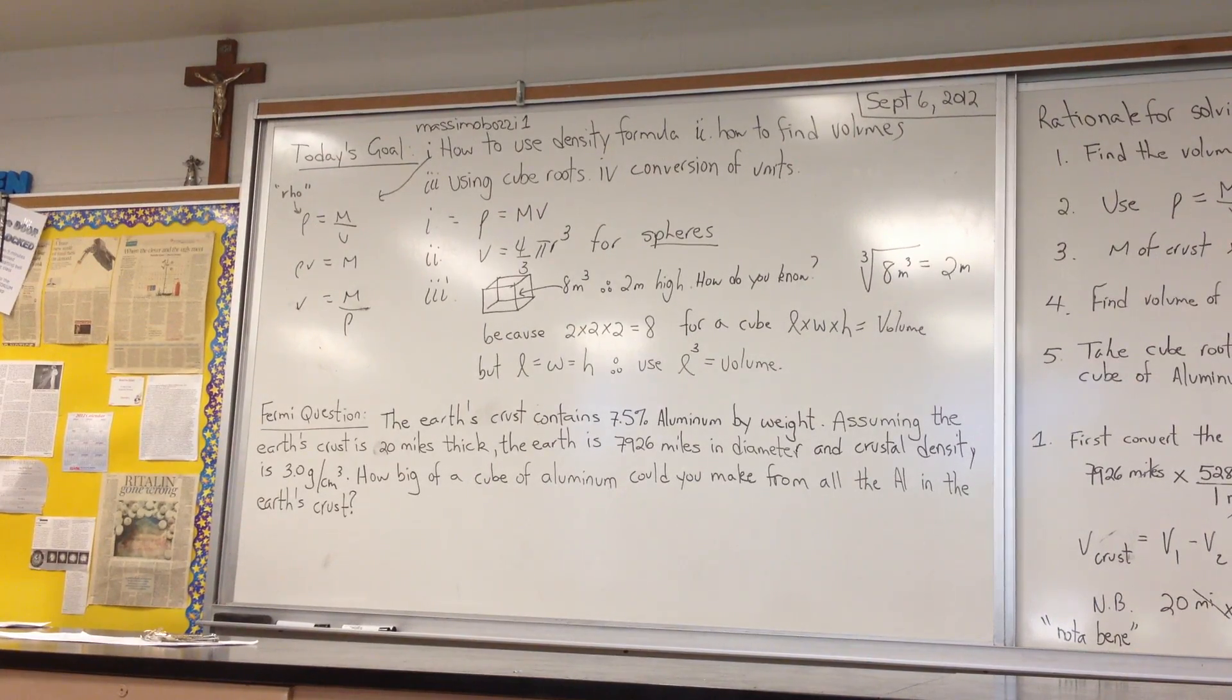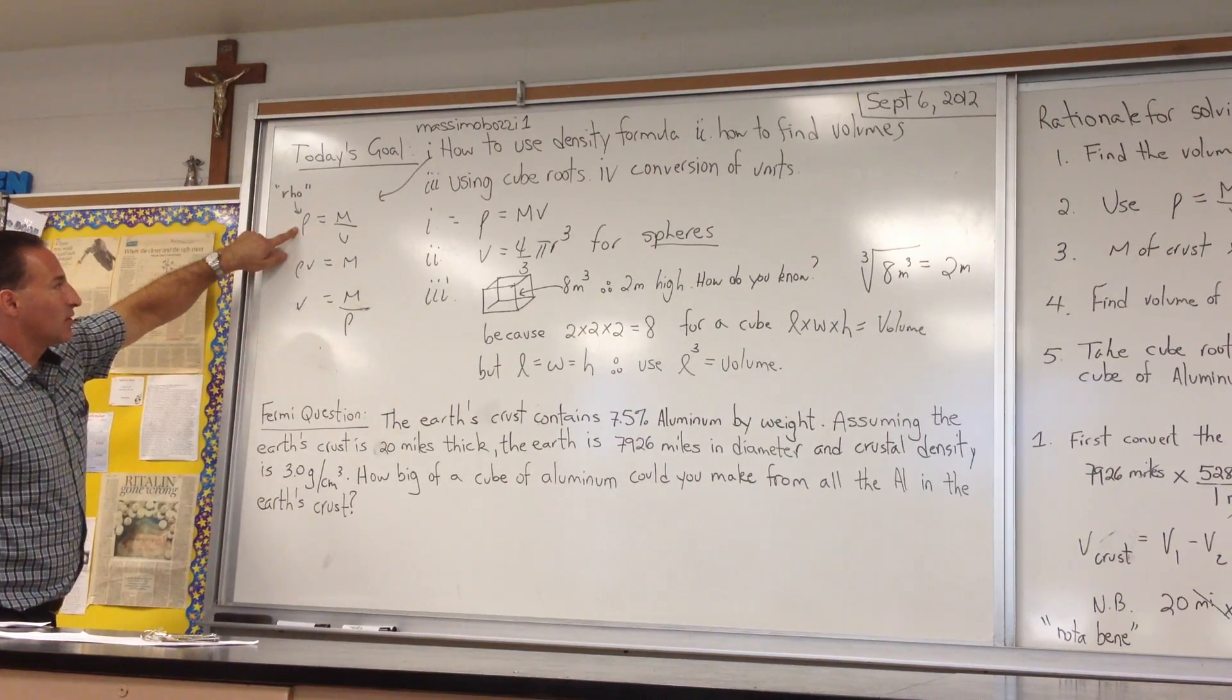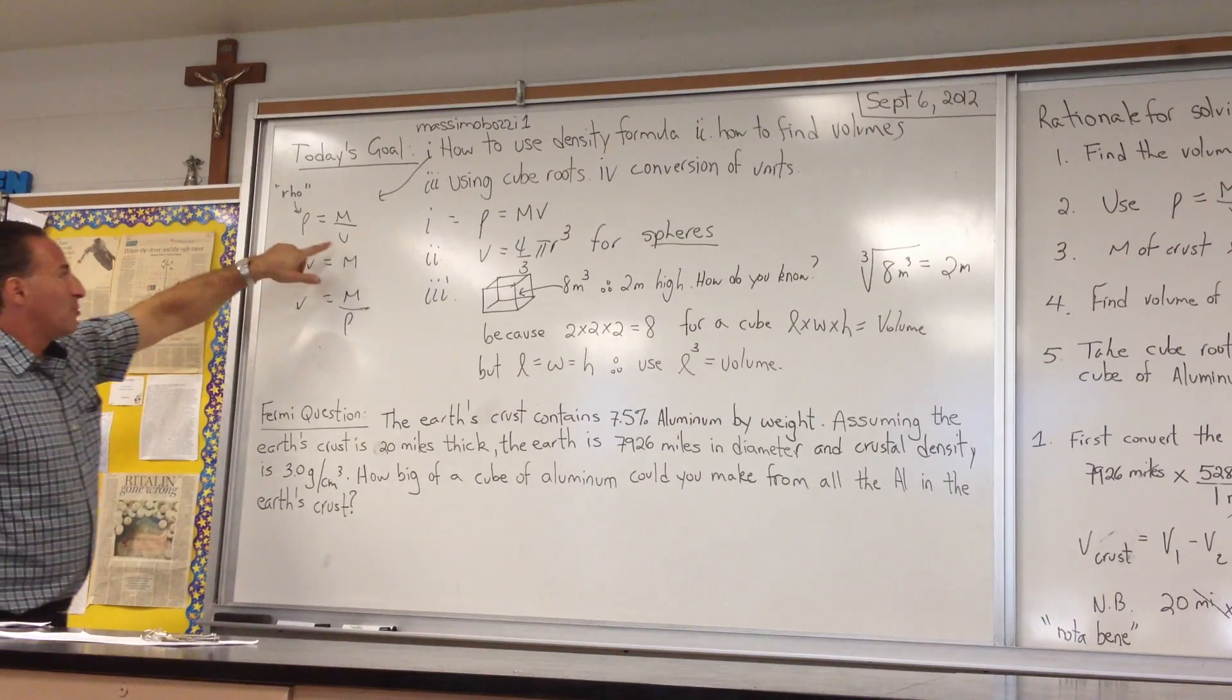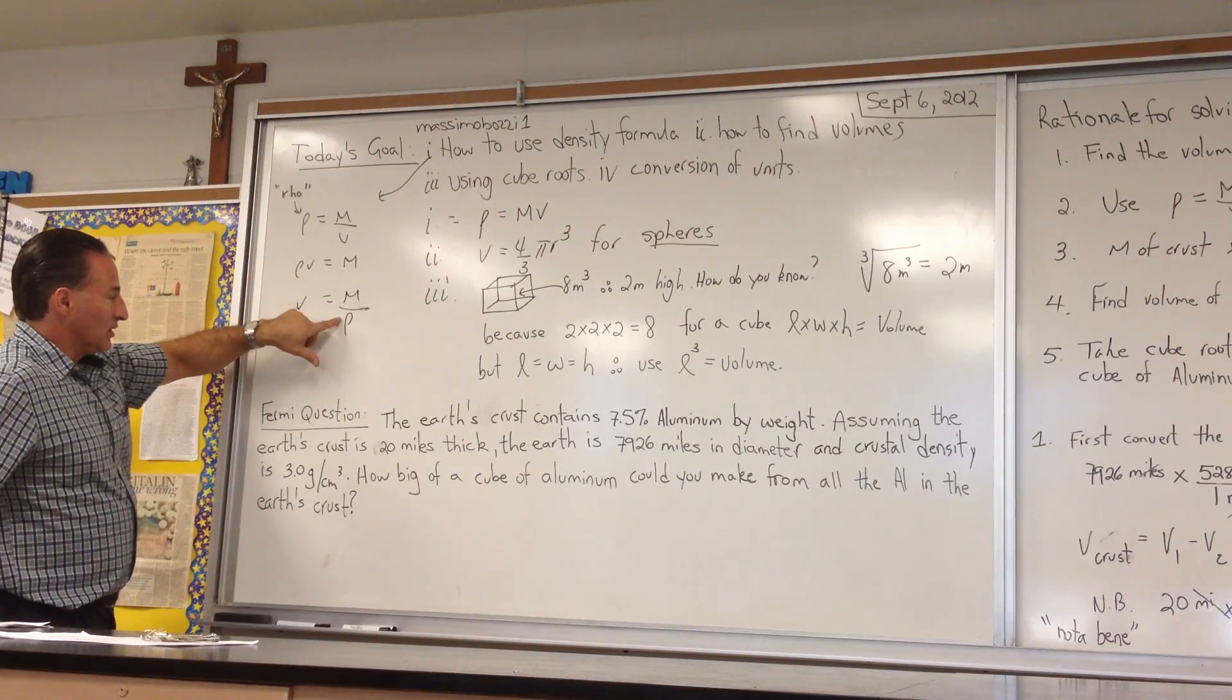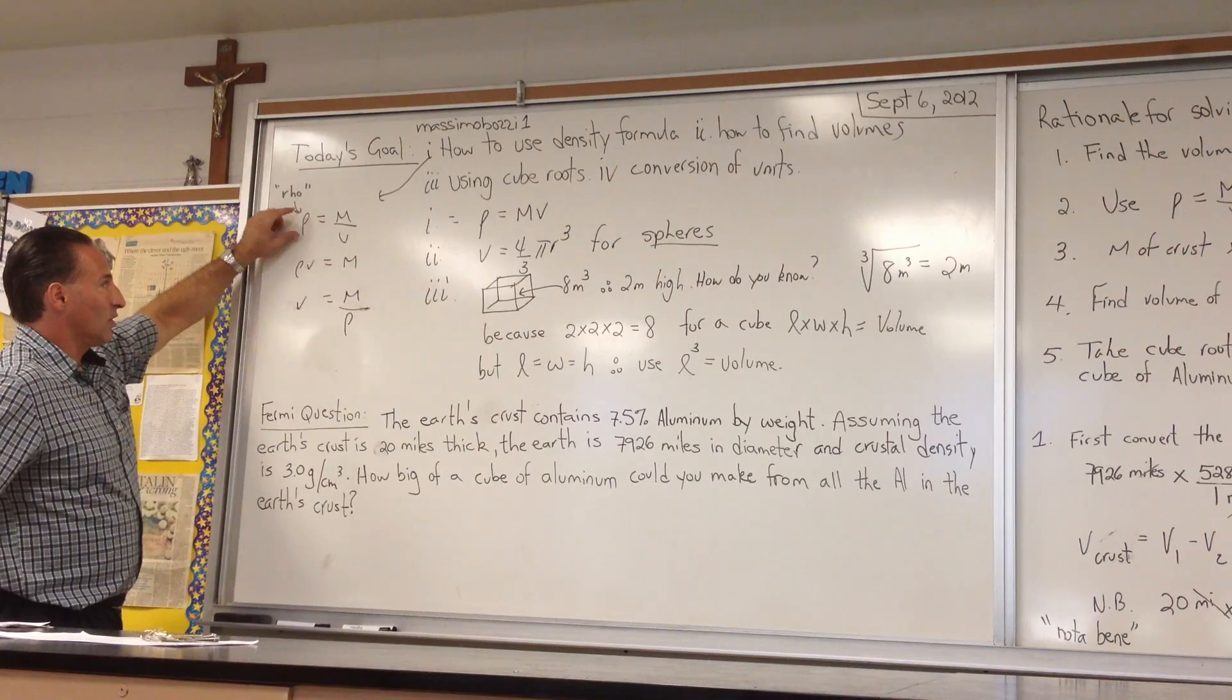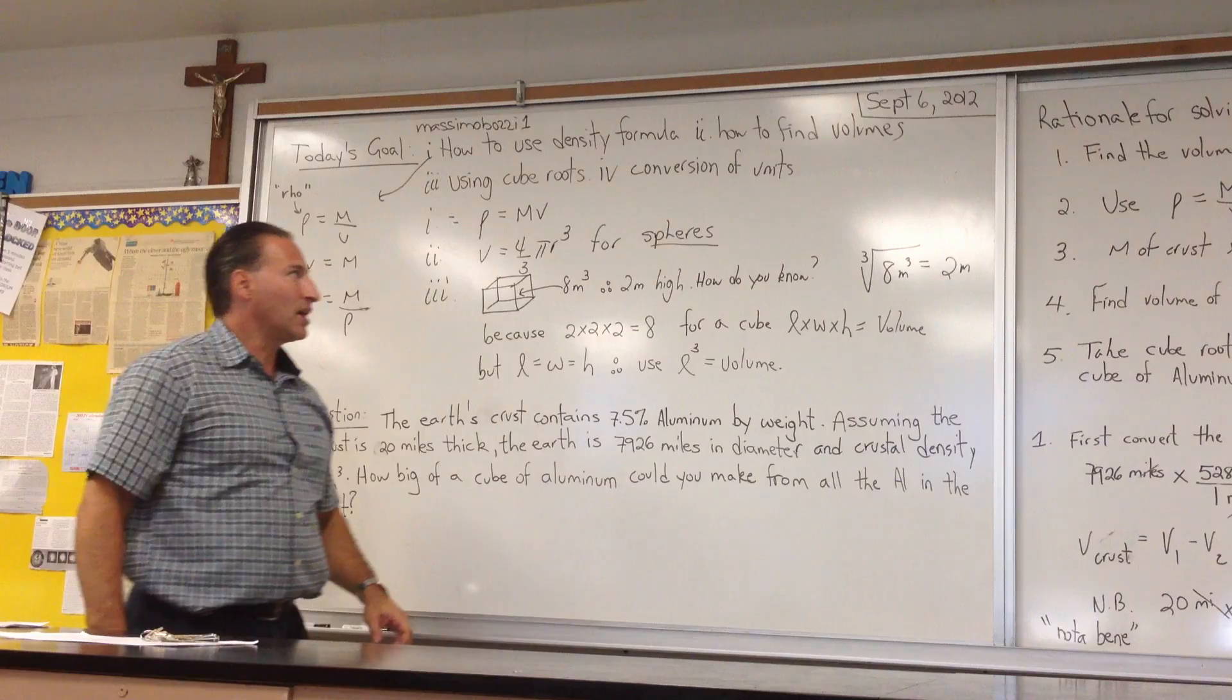We're going to learn how to use the density formula, which is rho equals mass over volume. Rho is the Greek letter used to symbolize density. We can rearrange the formula to have density times volume equals mass, or volume equals mass over density. There are three variables and three ways you can rearrange the formula.